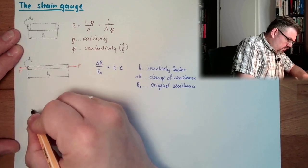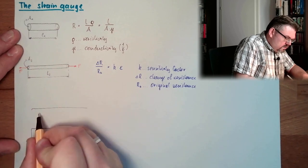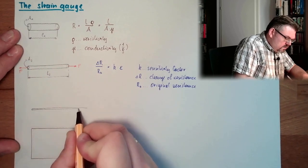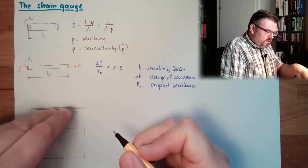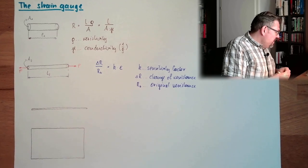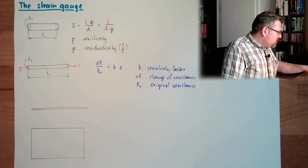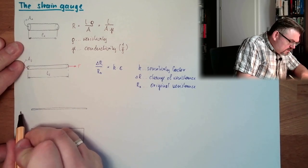How we do that? Well, we have some base material. Here is the base material. I'll draw it here also. This is the base material. Here in the top view. Here from the front view. Very thin material.